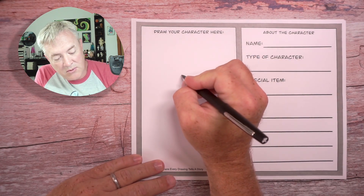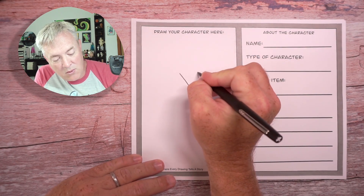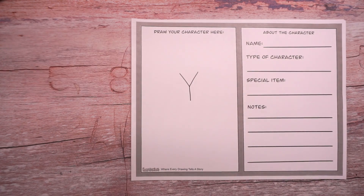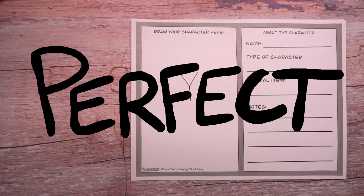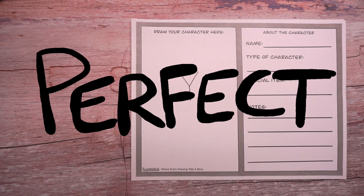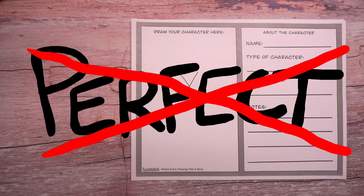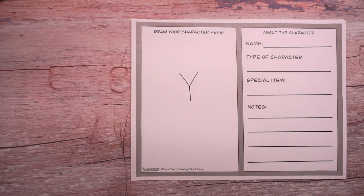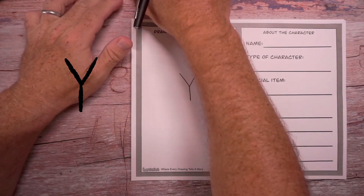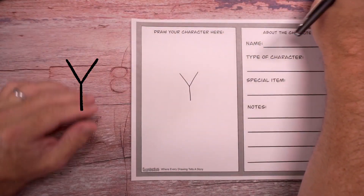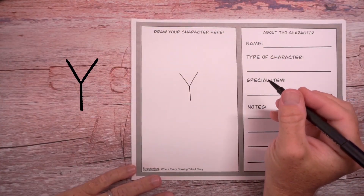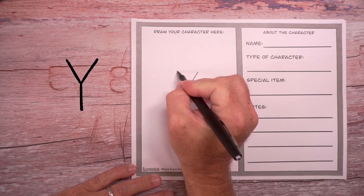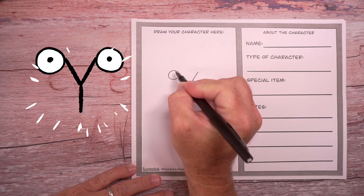To draw this character, we're going to start with a letter Y. And remember, I don't draw perfect — I draw for fun. So it is okay to make mistakes, it's okay to mess up. I'm going to make mistakes, I'm going to mess up, and I do a lot of drawing. So the first thing we're going to do is draw the monster's eyes on both sides of our letter Y.